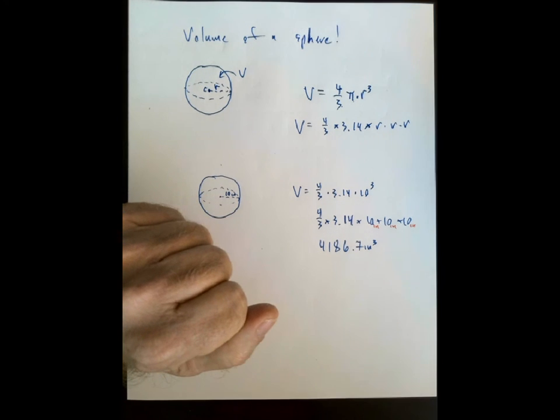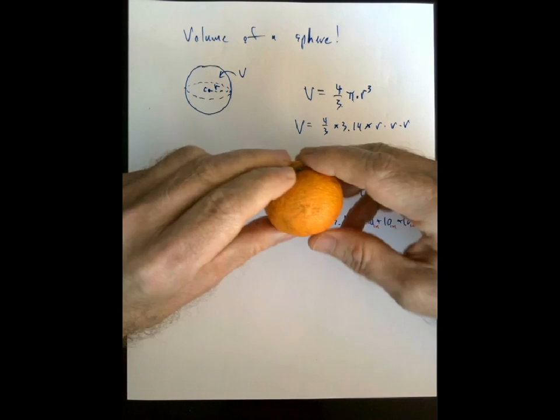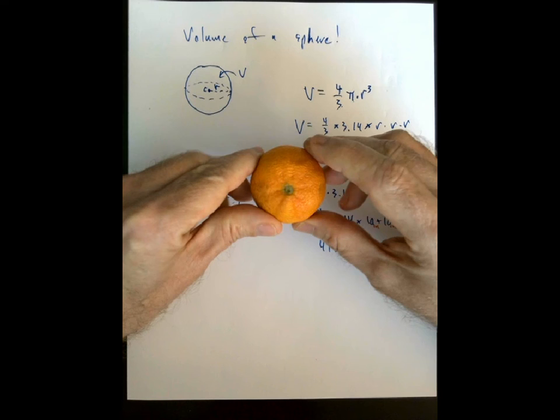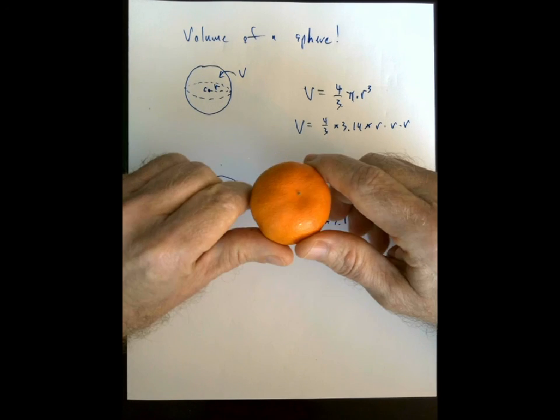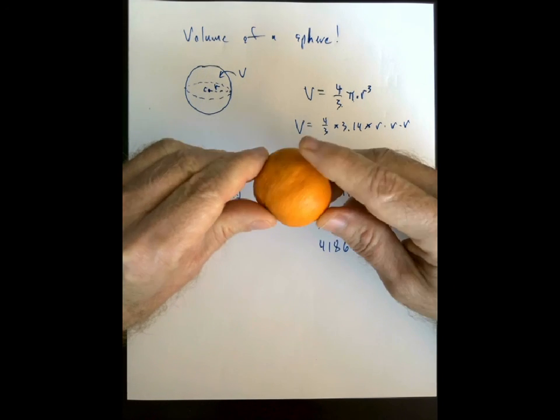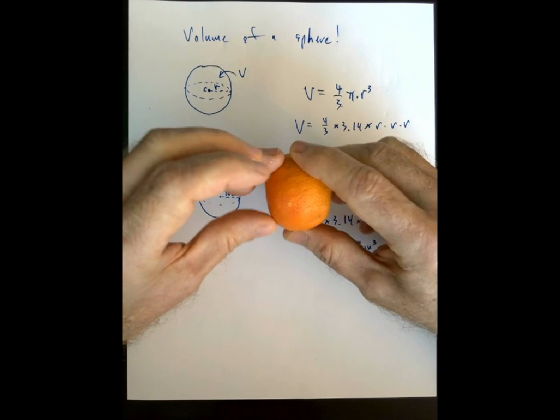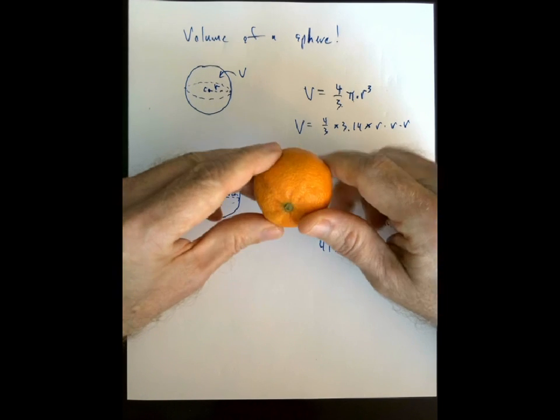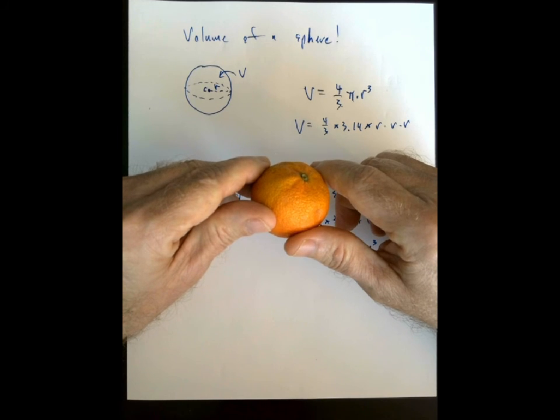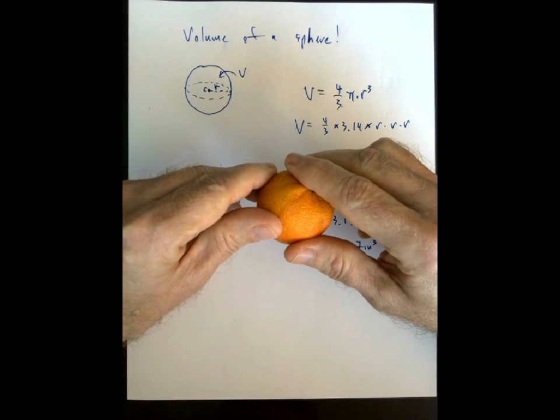Lots of things are approximately spherically shaped, like, for example, this tangerine here, or the Earth, which is close to being a sphere, but not quite. And so, we can sort of roughly calculate the volume of these shapes by using the volume formula for a sphere.